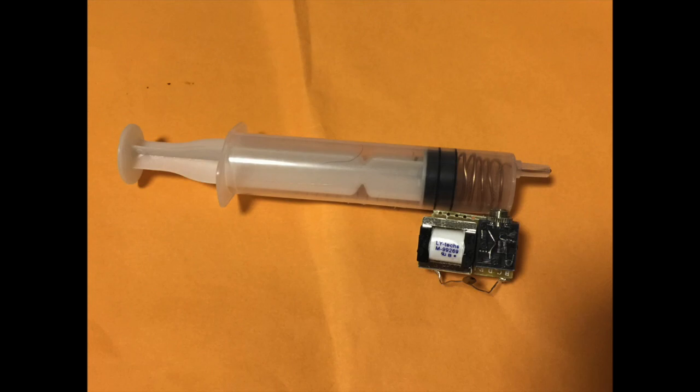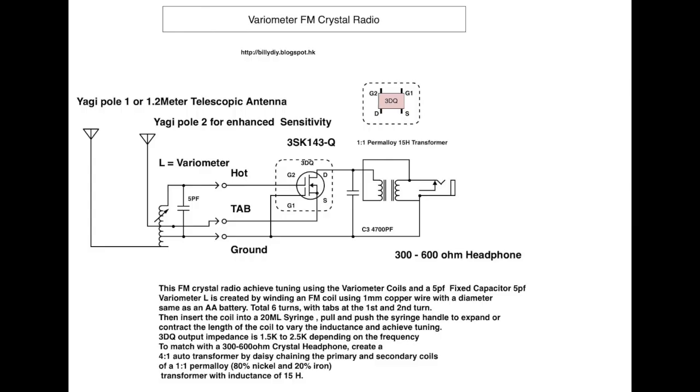This uses a fixed capacitor matching with a variometer which is a few turns of copper wire over an AA cell as the frame and then you take it out. So this is the circuit diagram.